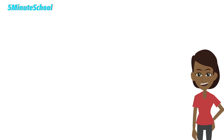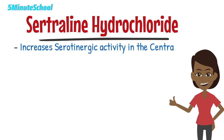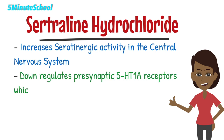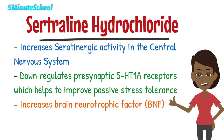Sertraline increases the serotonergic activity in the central nervous system, and over time with continued use, there is downregulation of presynaptic 5-HT1A receptors, which is associated with an improvement in passive stress tolerance. Sertraline use can also increase brain neurotrophic factor, and studies show that depression is linked to low brain neurotrophic factor. So this is the basic principle of how sertraline works.